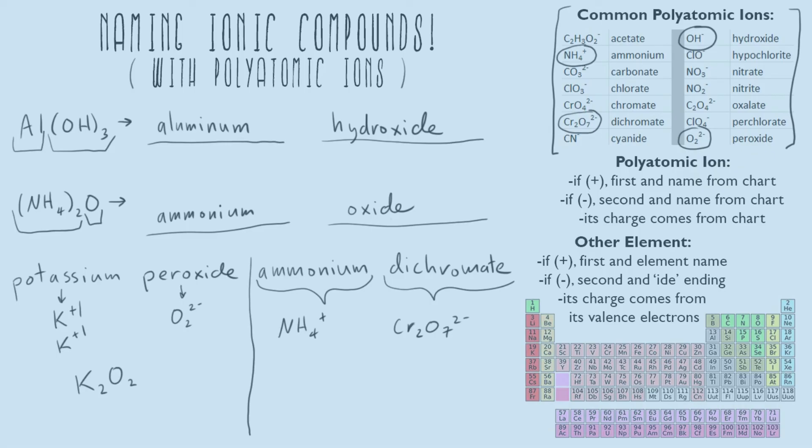We want to add something more positive to get closer to zero so if we add NH4 plus, remember that if it just says plus or just says minus that means one plus or one minus. Now we have two plus coming from our two ammoniums and two minus coming from our one dichromate.